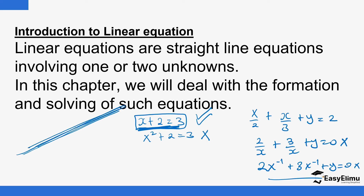Linear equations represent the relationship between variables when there is movement along a straight line. For example, if a line represents the relationship between x and y, we look at how x and y vary as you move along that straight line. These equations representing straight lines can be in one unknown or two unknowns.